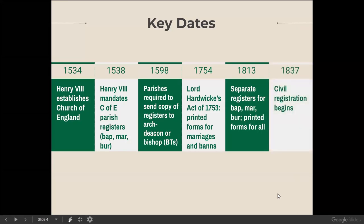In 1837, civil registration begins. Civil registration is just the reporting of a vital event to the government — in England, the government required that births, marriages, and deaths be reported to them, starting in July of 1837. Before 1837, the most reliable genealogical records are church records. Starting in July 1837, we have both church records and government records, so those can support and reinforce each other. If one is missing, hopefully you can get the other.